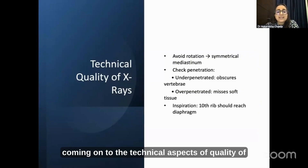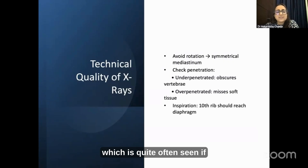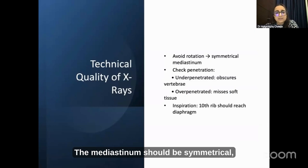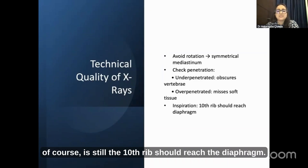Regarding the technical aspects of X-ray quality, you must try to avoid rotation, which is quite often seen if your X-ray is not well-positioned, especially in the ICU. The mediastinum should be symmetrical. Check for penetration — under-penetrated films obscure vertebrae, over-penetrated films miss soft tissues. For inspiration, the 10th rib should reach the diaphragm.